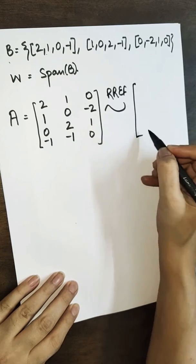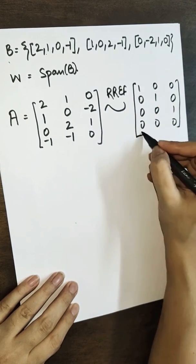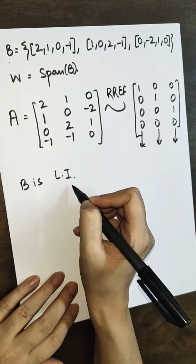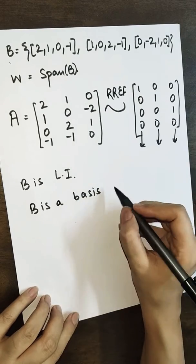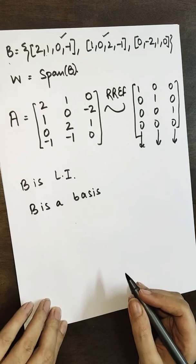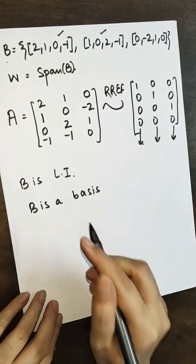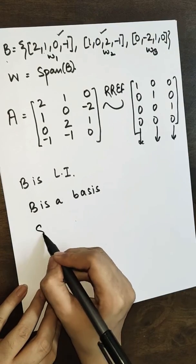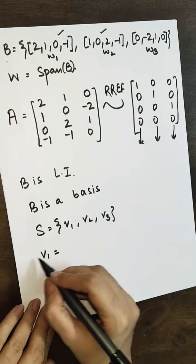The reduced row echelon form of A comes out to be the identity-like matrix with a pivot in every column: rows (1,0,0,0), (0,1,0,0), (0,0,1,0). Since there is a pivot in every column, B is linearly independent. Combined with B spanning W, B is a basis for W. However, B is not orthogonal — the vectors are not mutually perpendicular. So we apply the Gram-Schmidt process to obtain an orthogonal basis. I label the vectors w1, w2, w3.